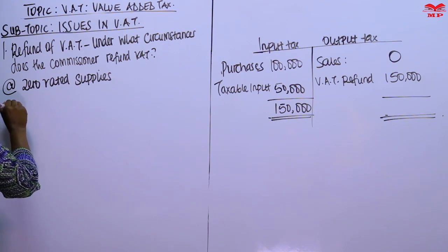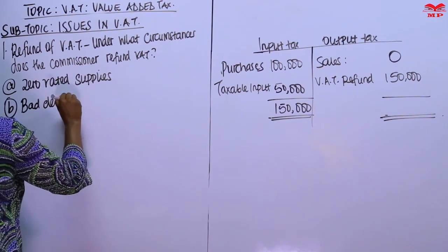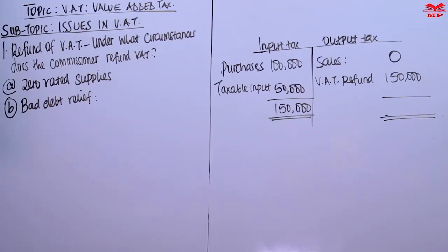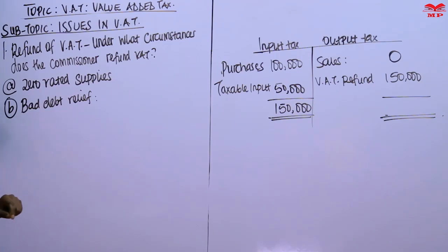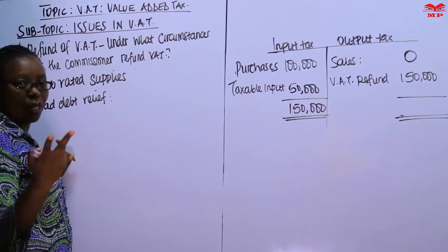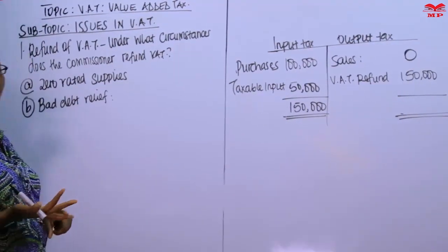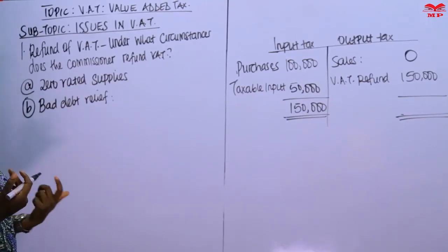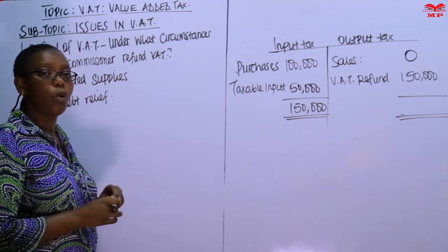The second condition is in the case of bad debts — what we call bad debt relief. A debt is considered bad at the earlier of two things: one, the expiry of three years since the date of supply; and two, if the debtor has been declared bankrupt and you have proof from a court of law. In such cases, you recover the VAT you paid on behalf of your debtor.